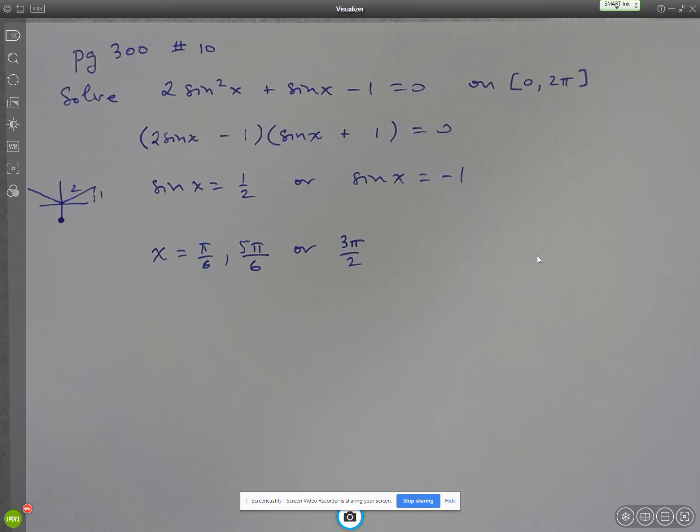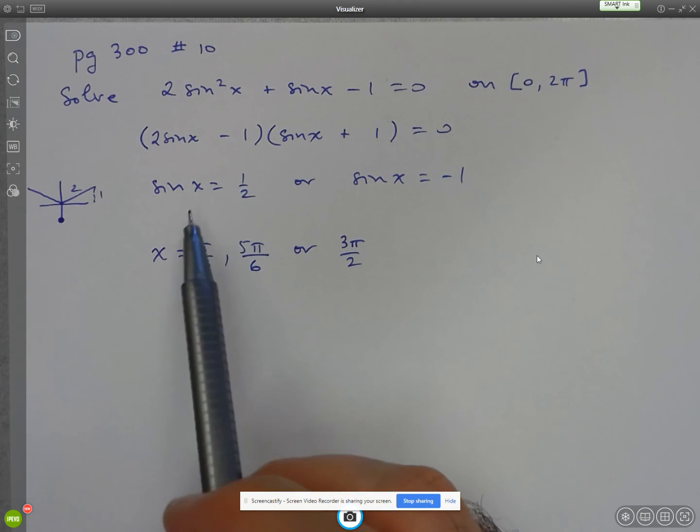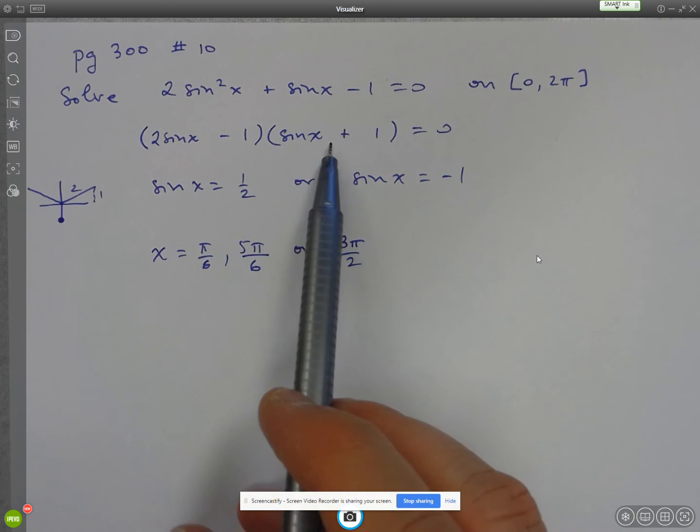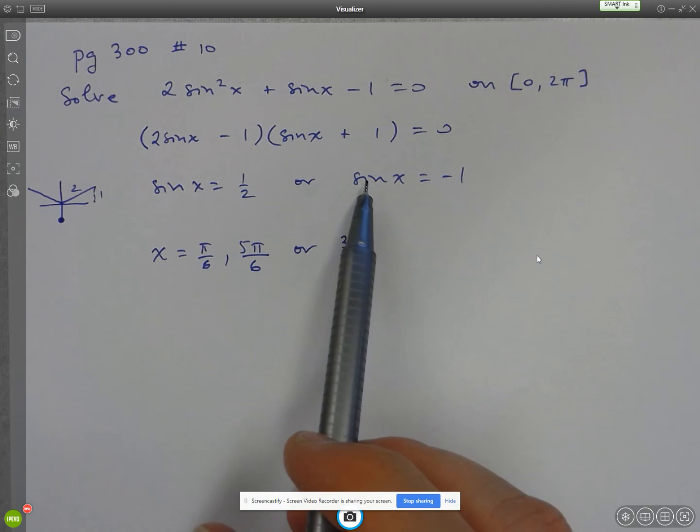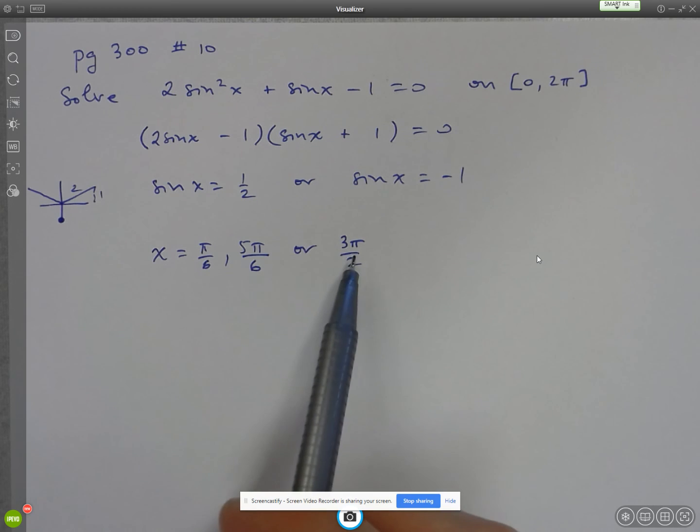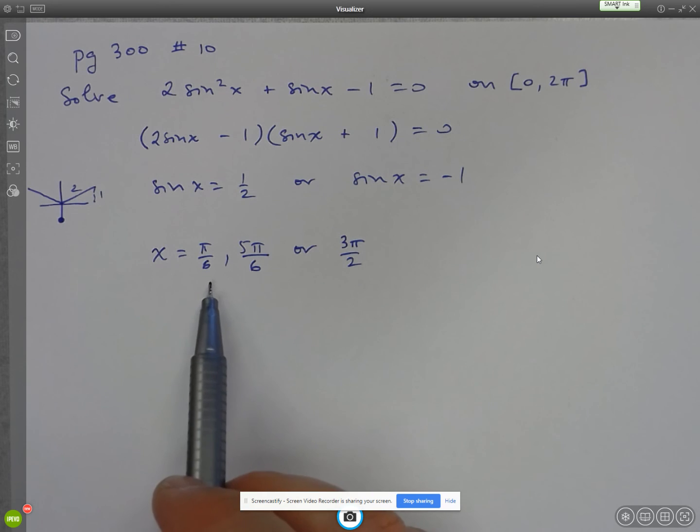All right. So just to recap, your goal when solving a trig equation is to eventually isolate trig ratios. In this case here, we had to do that by first factoring it as a trinomial and then solving the two individual equations. From there, we used our knowledge of special angles to determine our answers. And since we were only interested in 0 to 2 pi,